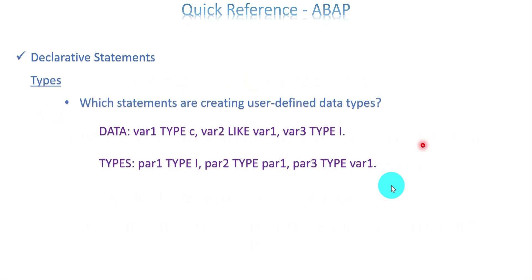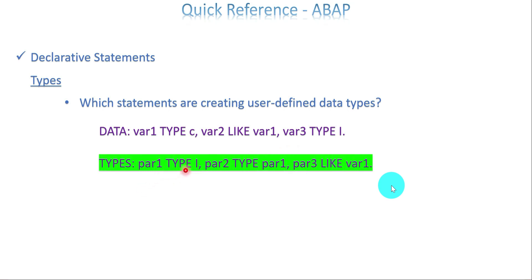I have a few statements here. The question is which statements are creating a user-defined data type with this declaration. I have two different declarative statements: one is DATA and the other one is TYPES. I am not talking about TYPE here, I am just talking about TYPES. So here you have TYPE and LIKE also. Three different data objects or variables, and here also three parameters. Which actually creates a user-defined data type? The answer is TYPES — it creates par1 as an integer data type, par2 again as integer because it refers to par1 which was already created as an integer data type, and this is also another integer data type using LIKE variable1.